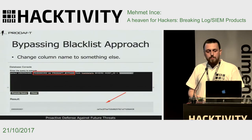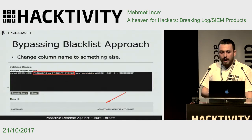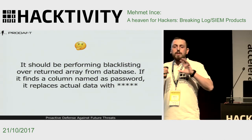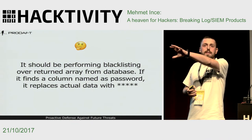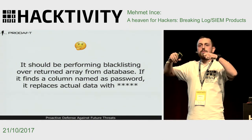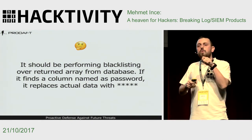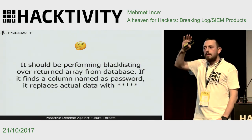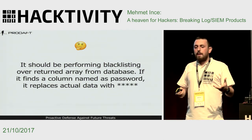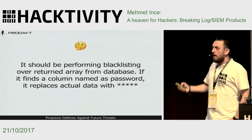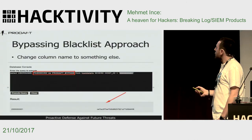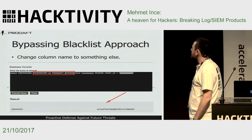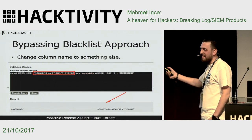We asked ourselves: how is it possible that even when getting results directly from the database, the application still doesn't show the password? The idea was there should be some sort of blacklisting — the application retrieves columns as an array and looks for special keywords like 'password', then changes the data. So we changed the column name: 'password AS product_bypass', and it gave us what we wanted.